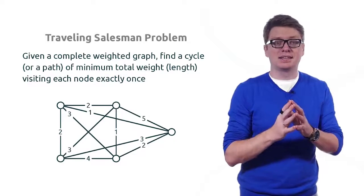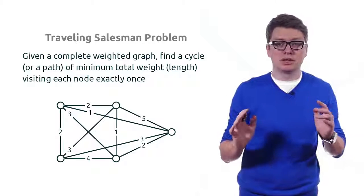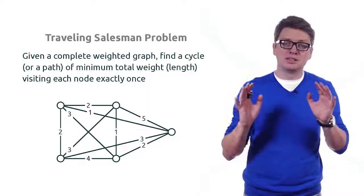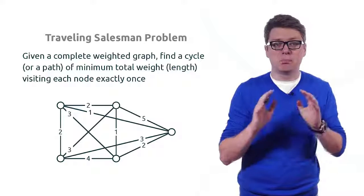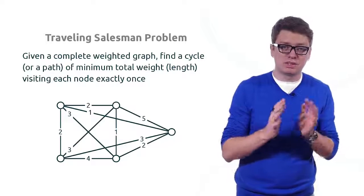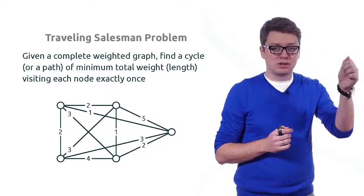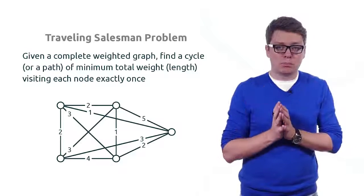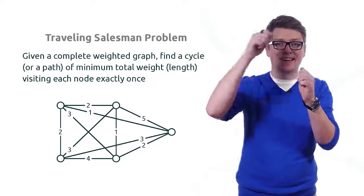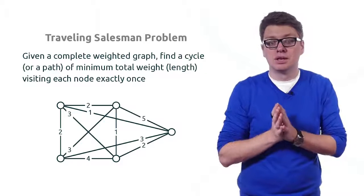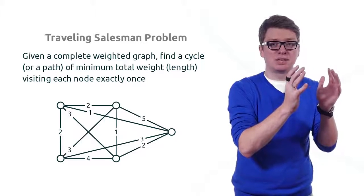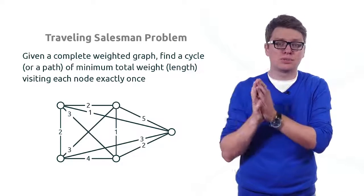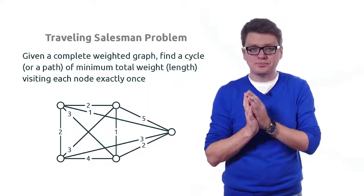What we're looking for is a cycle that visits every node exactly once and has the minimum total weight or minimum total length. Sometimes we are interested in finding a cycle, and sometimes in finding a path. The difference is that a cycle starts and ends at exactly the same node, while a path starts at some node and ends at a different node. In a cycle there are exactly n nodes and exactly n edges, while in a path there are n nodes and n minus one edges.